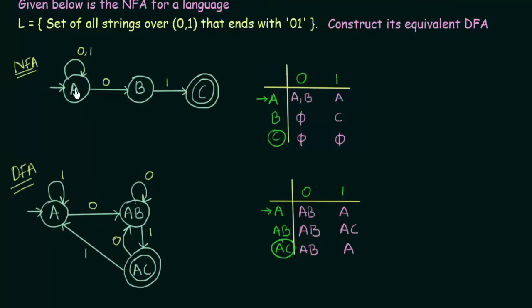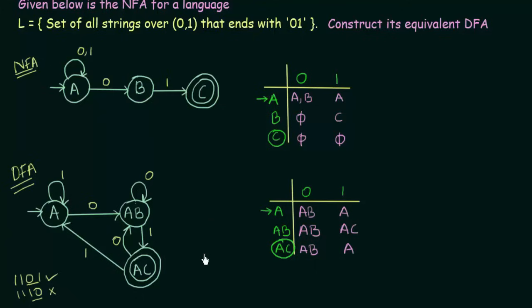This NFA accepts the set of all strings over 0,1 that ends with 0,1. Let's verify with some examples. For the string 1,1,0,1 — it reaches the final state, so it is accepted. For the string 1,1,1,0 — it ends in state AB, so it is not accepted. When a string ends with 0,1 it is accepted; otherwise it is not. This is how you convert an NFA to its equivalent DFA. I hope it was clear. Thank you for watching and see you in the next one. Bye.